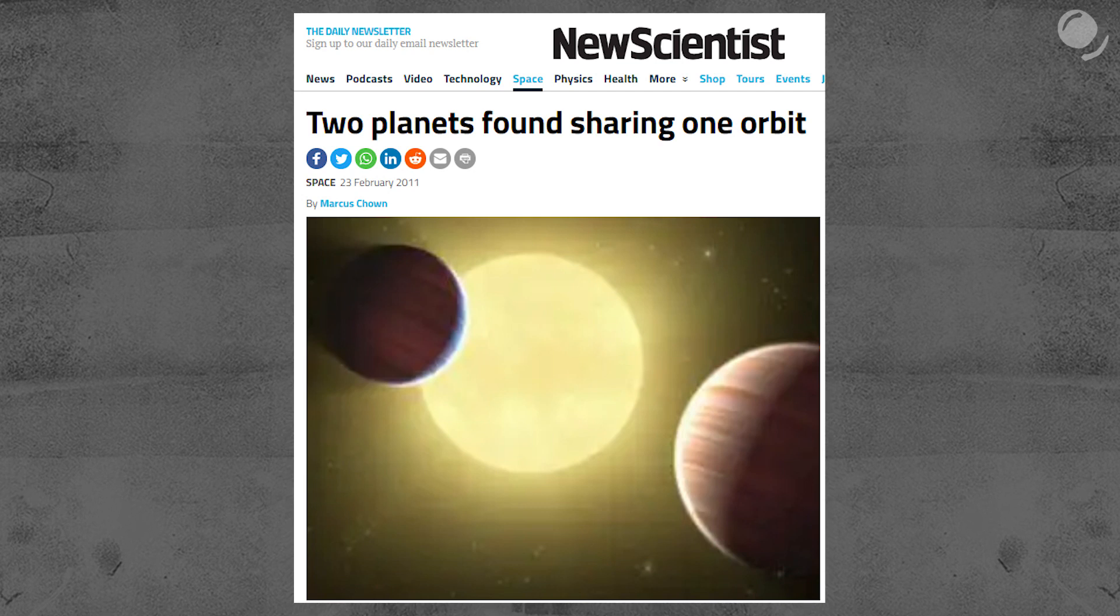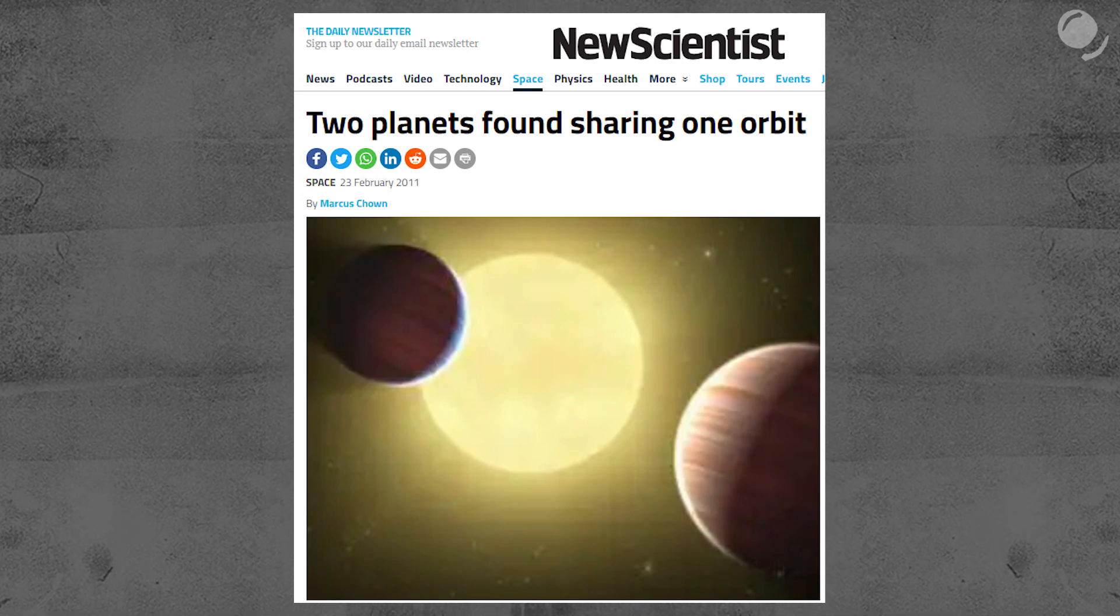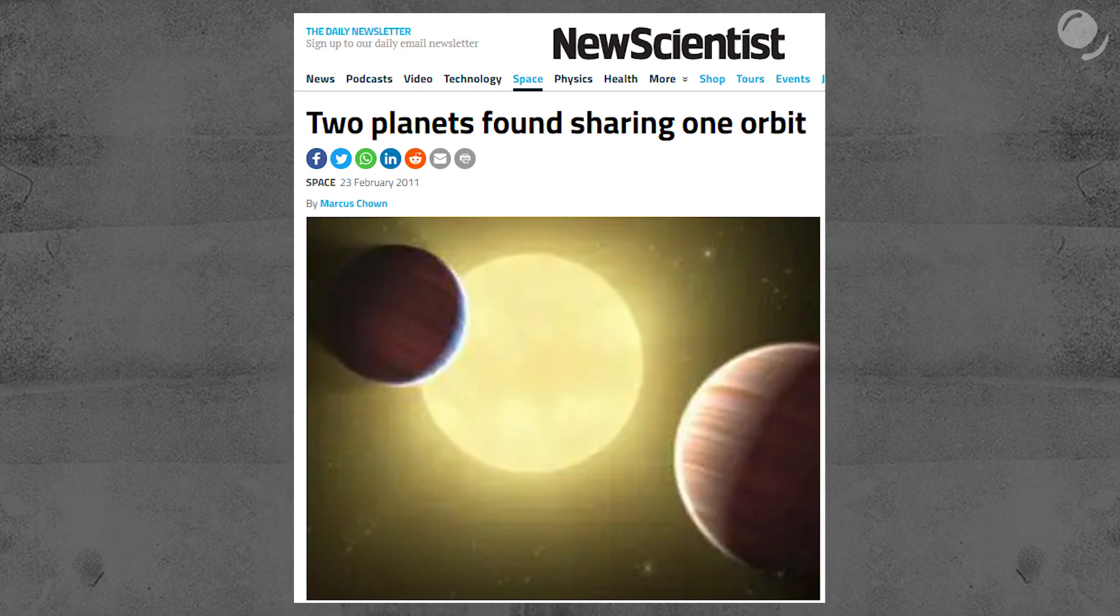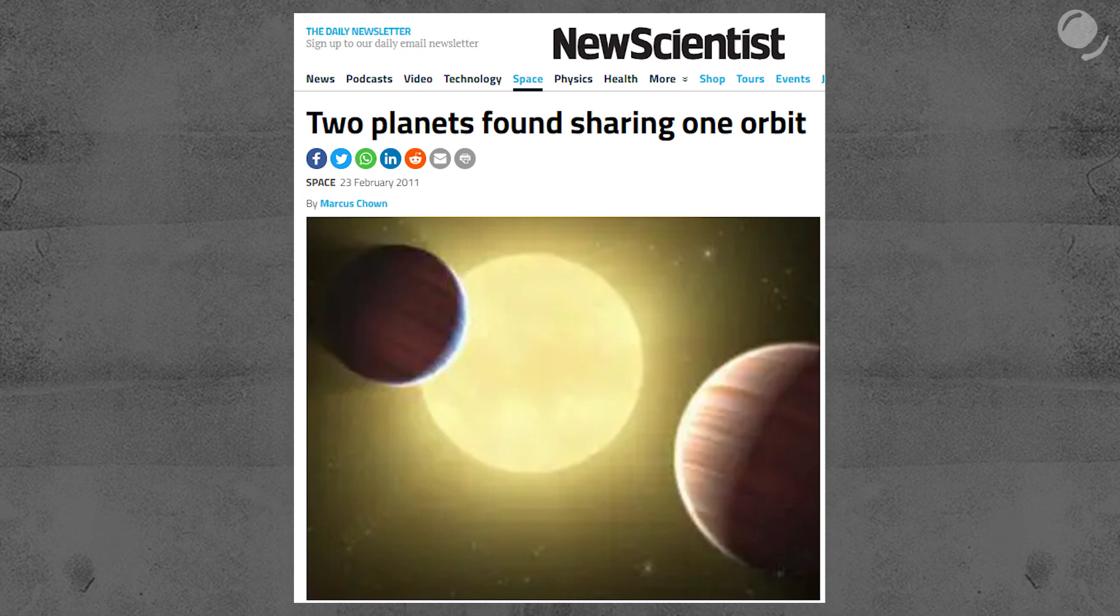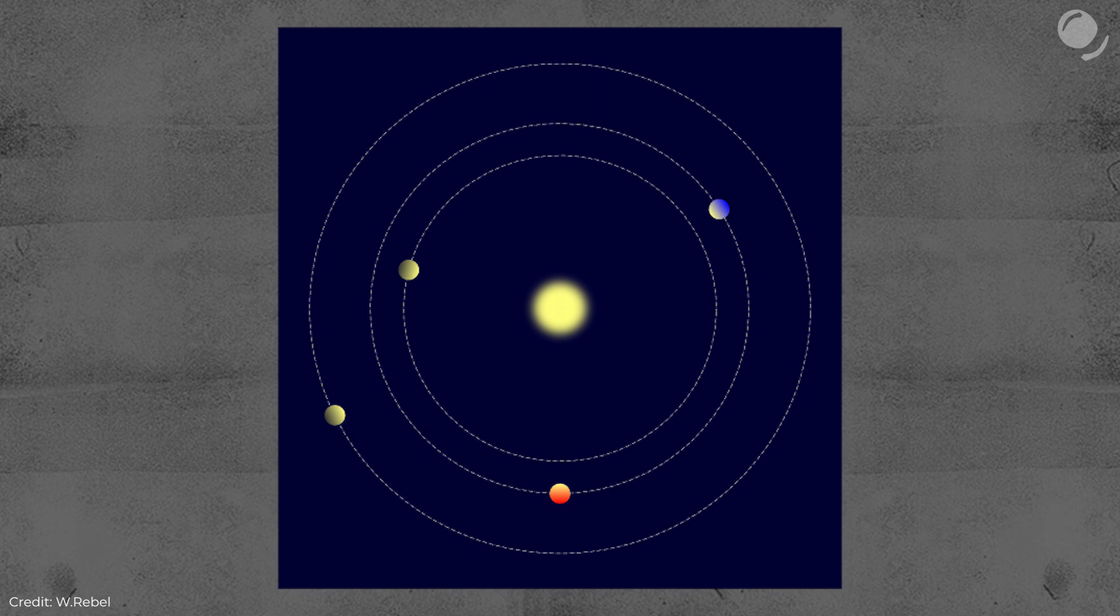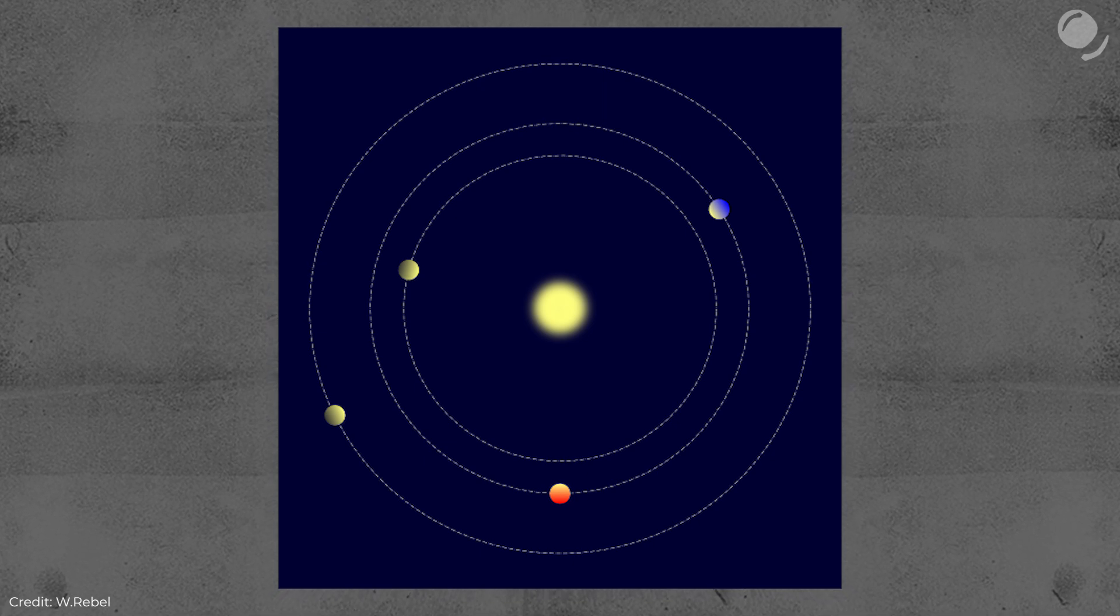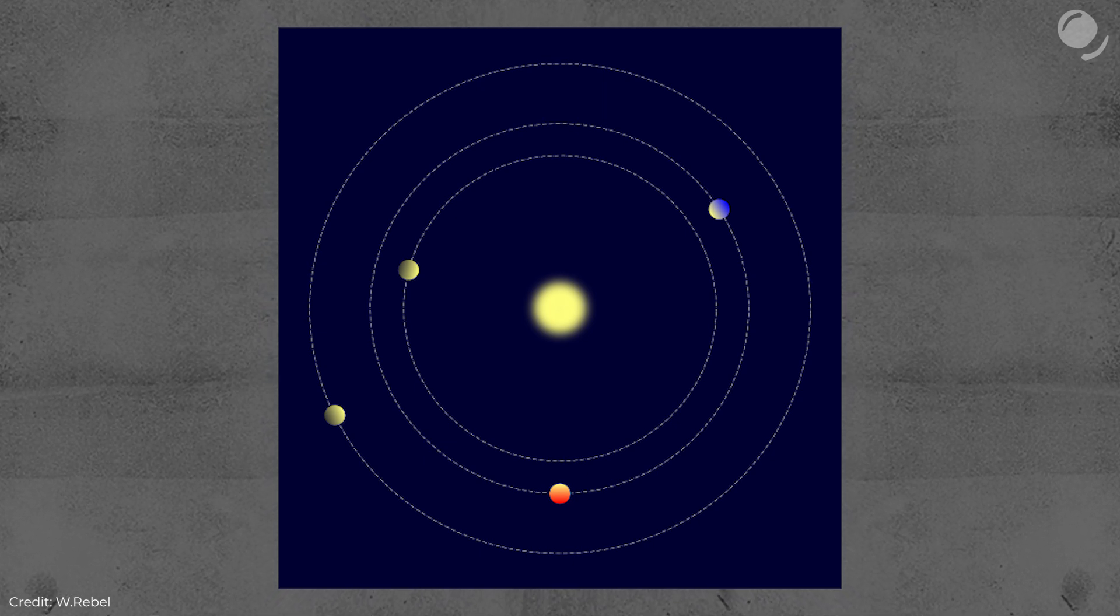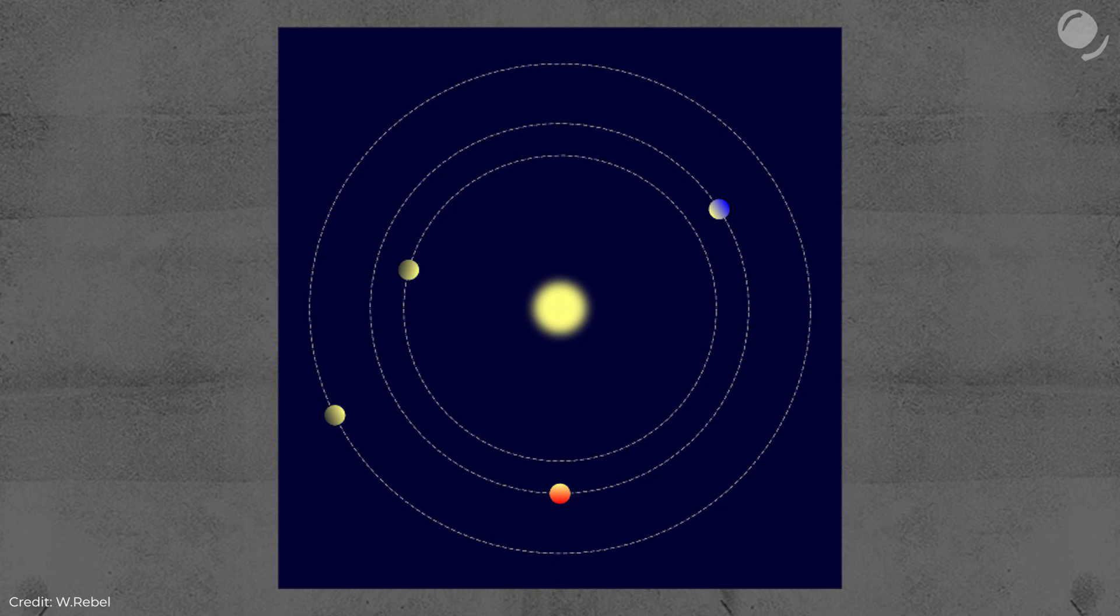And what about exoplanets? In 2012, a possible discovery of co-orbital exoplanets in the system Kepler-223 was announced. But later, after carefully analyzing the light curve, scientists concluded that it's way more likely explained by a more usual configuration of planets in different orbits. So, for now, it's basically nothing.